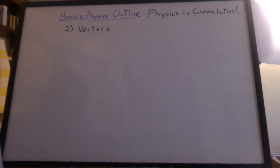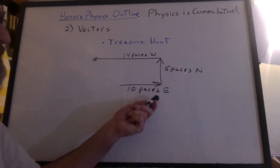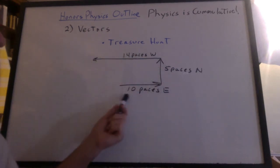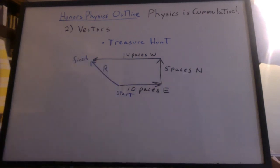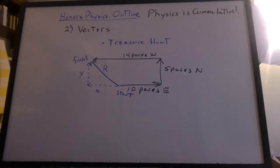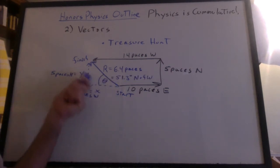The next unit was on vectors. Remember the treasure hunt? We went 10 paces east, 5 paces north, 14 paces west. These were all vectors that had a magnitude and a direction. The result went from start to finish. You could find the x and y components, and then find the magnitude using the Pythagorean theorem, and then find the angle using inverse tangent. We've been doing this all year.